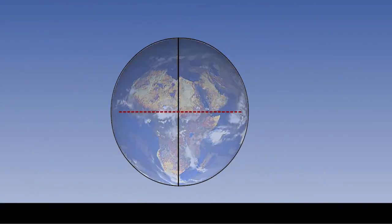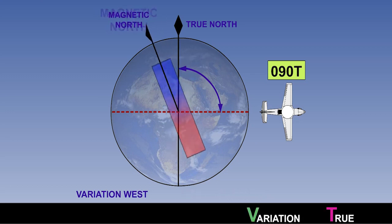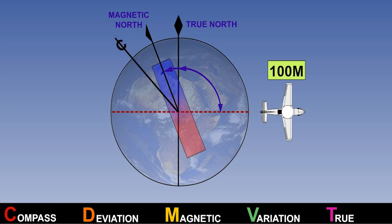Suppose we imagine an aircraft is flying on a heading of 090 degrees in relation to true north. If the magnetic variation is 10 degrees west, the heading in relation to magnetic north will be 100 degrees. If we now say that deviation is 10 degrees west also, the compass will be showing 110 degrees as a heading. So to recap, deviation is defined as the angular difference between the direction actually indicated by a compass needle and magnetic north.